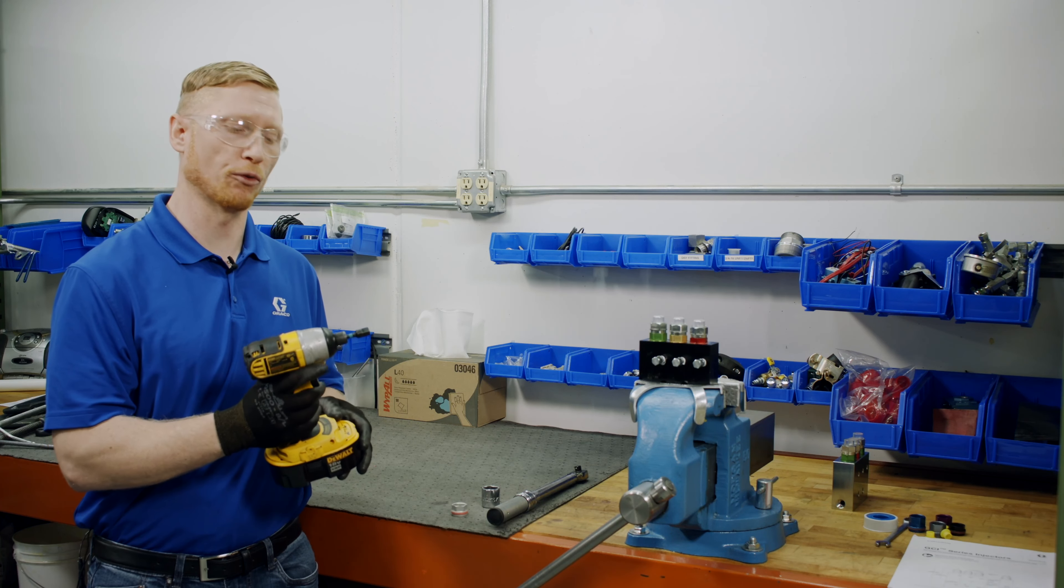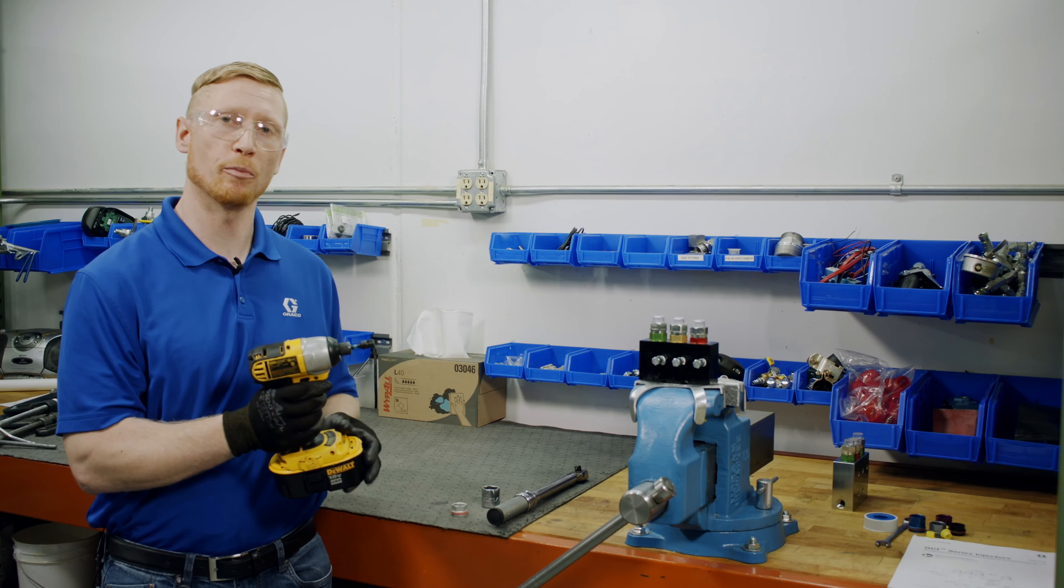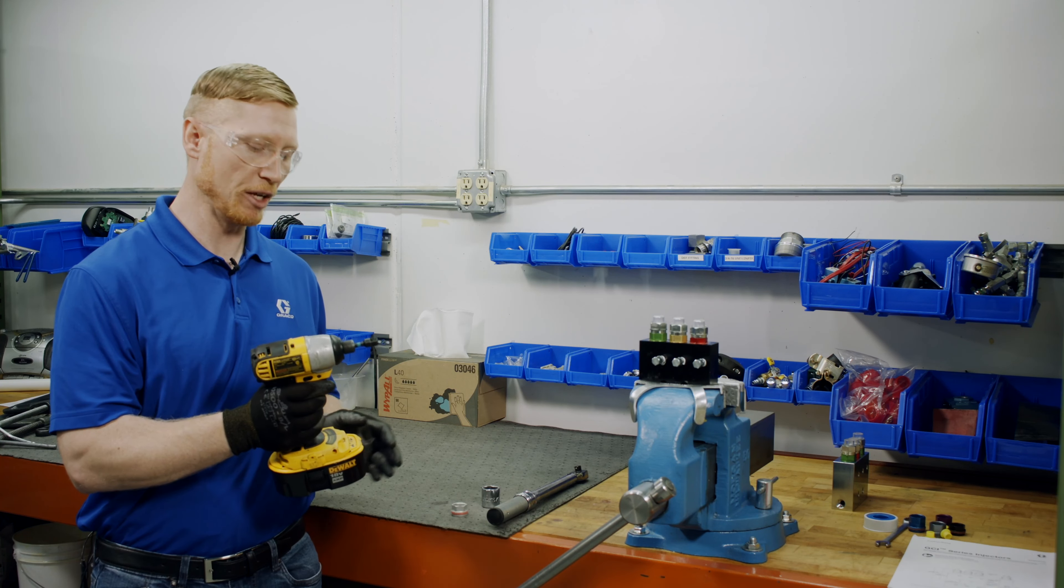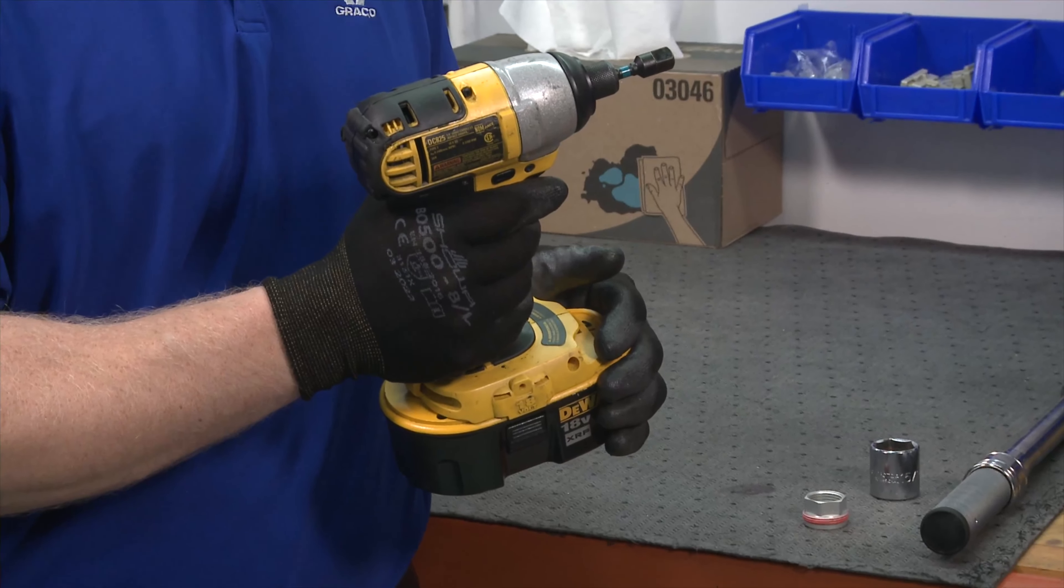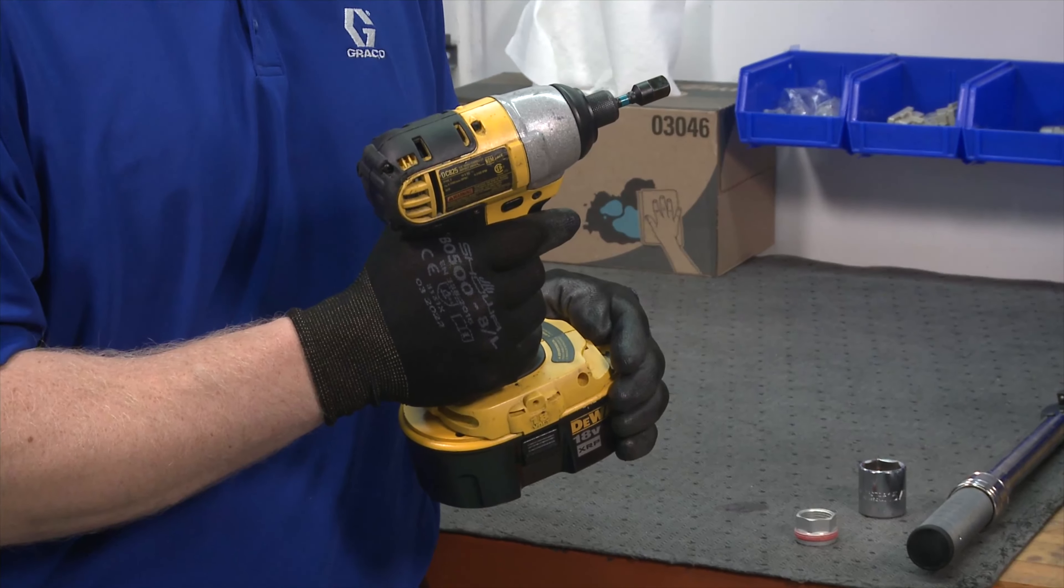Now one thing to mention is for when we're tightening our components back on our GCI manifold, we want to make sure that the impact driver is set at its lowest setting and not exceeding 100 foot-pounds.